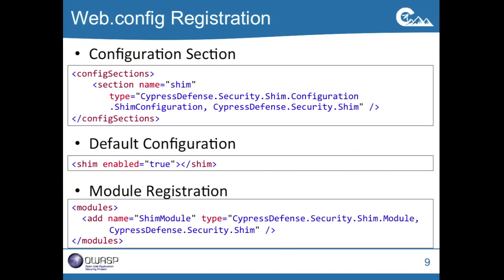Here's what we need to do. Our config sections element in the config — go ahead and add the section, reference the cypressdefense.shim configuration class. We've got our default configuration: all you have to do is add that one line, shim enabled true, and that will add every single header to your response headers. Then the module registration tells the module to actually run on every request that comes through.